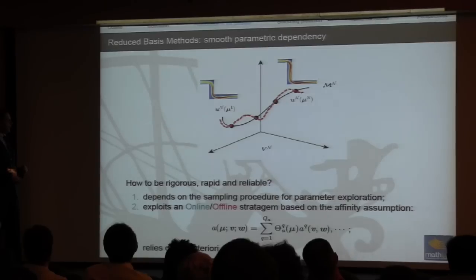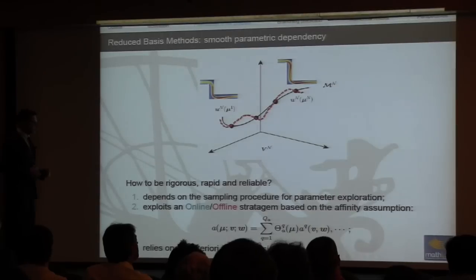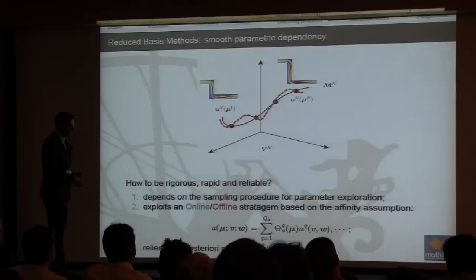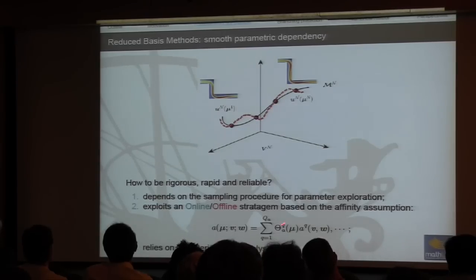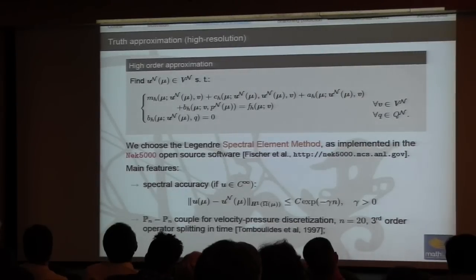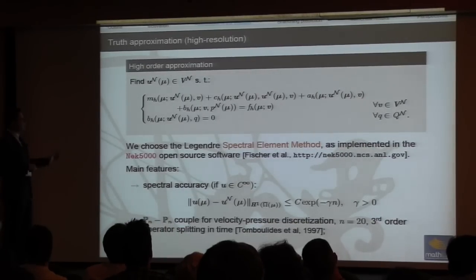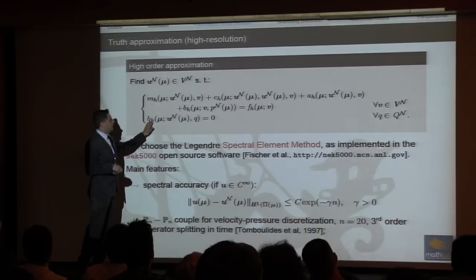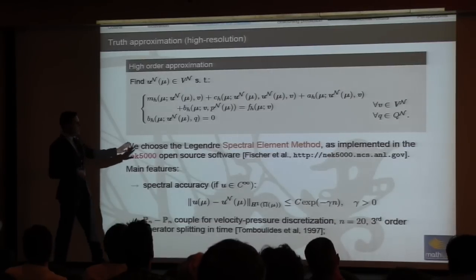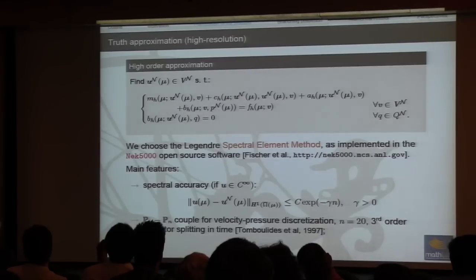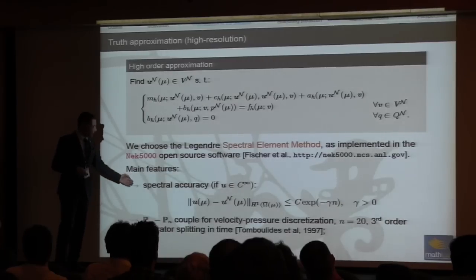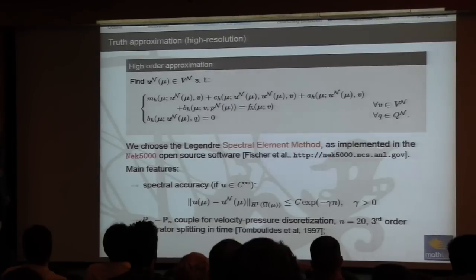An important property is the affine decomposition: we decouple the parametrized operator into a sum of parameter-independent linear forms multiplied by parameter-dependent theta coefficients. For the truth approximation, we use the Legendre spectral element method via the open-source Nek5000 software proposed by Paul Fischer, relying on its spectral accuracy and favorable approximation properties.